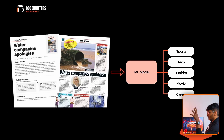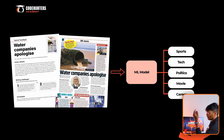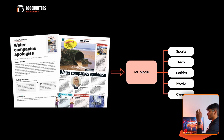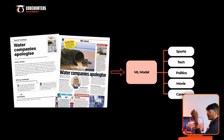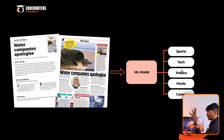Let's see another example of an ML model for classification. Take a newspaper: news can be categorized as sports, tech, politics, movie, career — multiple categories. We can classify it. Binary classification is spam or not spam (two categories). When there are more than two categories, that is multi-class classification.